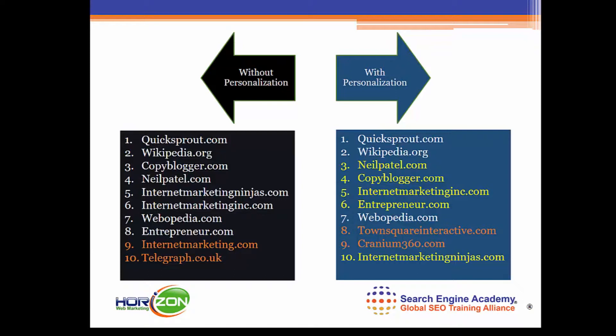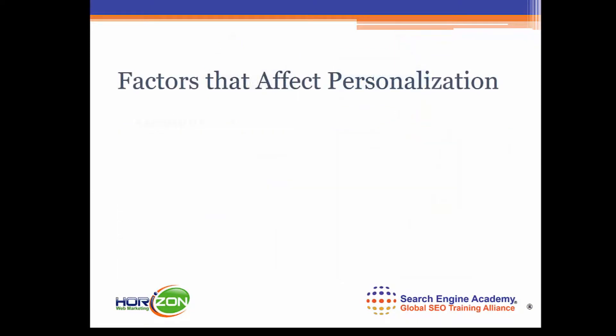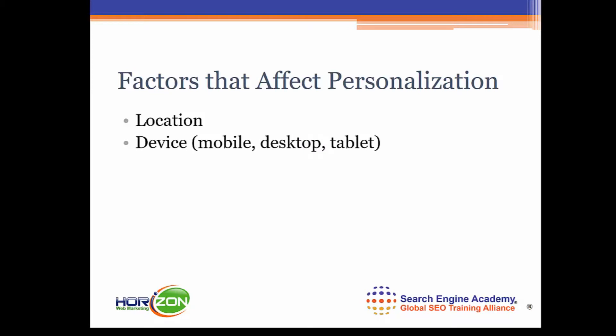This is basically the way personalization works. Now, what are the factors that relate to this? First of all, location affects which results you see. Secondly, the device you're using — whether it's mobile, desktop, or tablet — also plays a role. And your browsing history is going to affect the results you see as well.